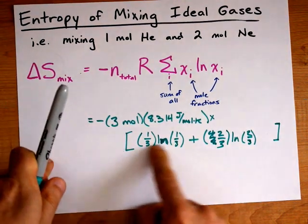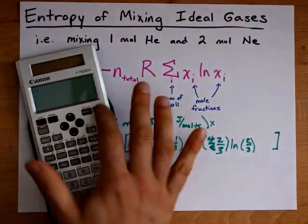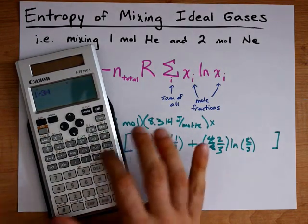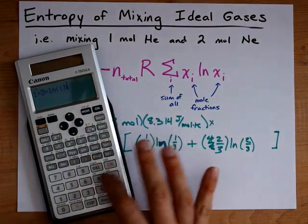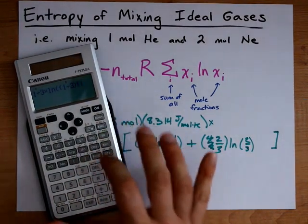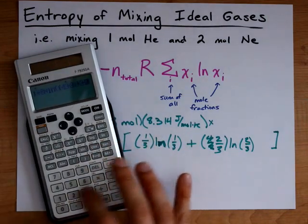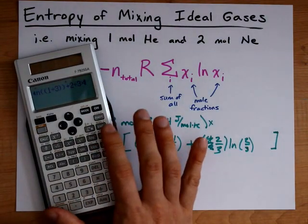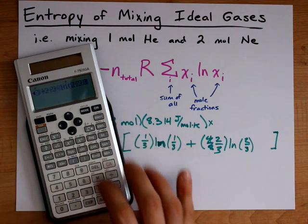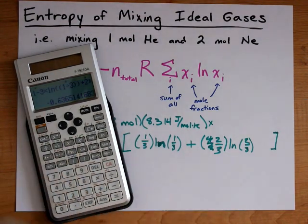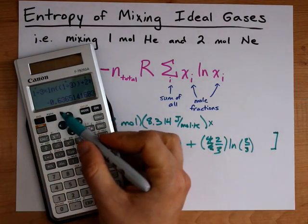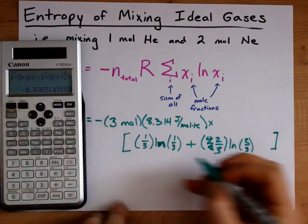Now, this is just a calculation, but I'm going to do this part separately for you. That's one third times the ln of one third, plus two thirds times the ln of two thirds. I end up with negative 0.6365 from that.